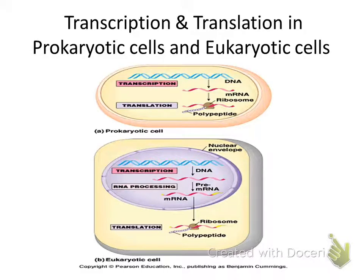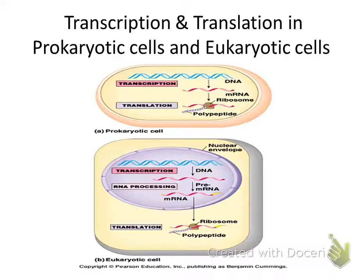Transcription: DNA makes mRNA. This is the process of making a recyclable, workable copy of DNA in the form of RNA — specifically mRNA. We're making the message, like a photocopy. mRNA is made by an enzyme called RNA polymerase. Remember that DNA polymerase made DNA, so it only makes sense that RNA polymerase would make RNA.